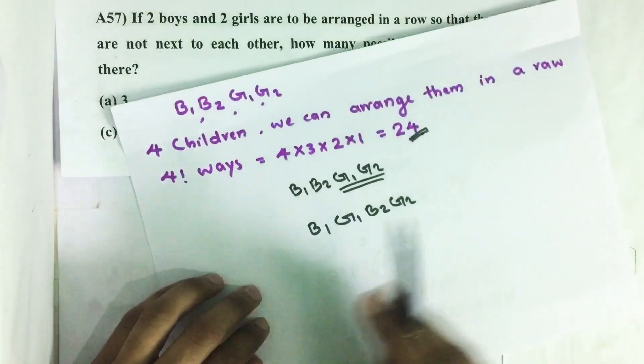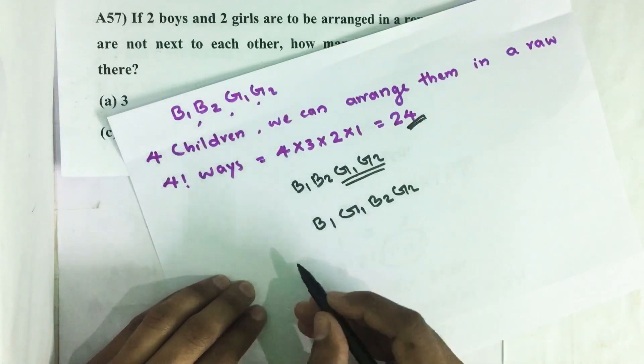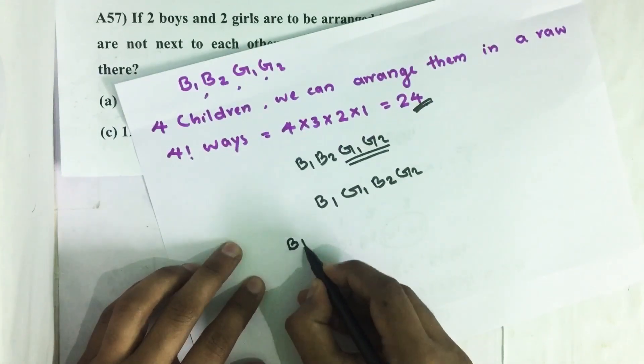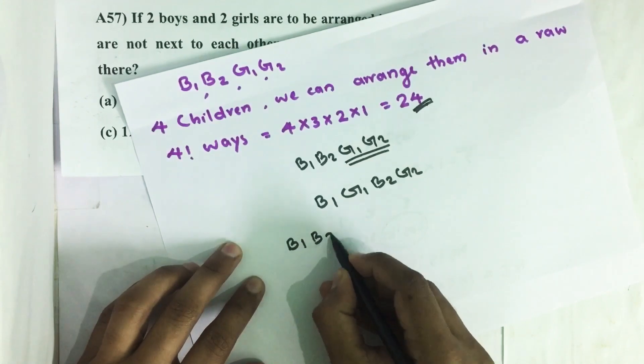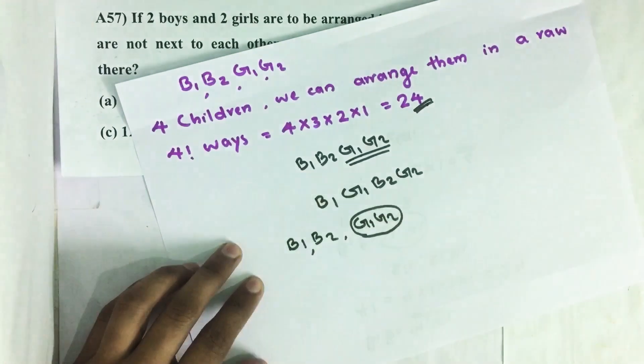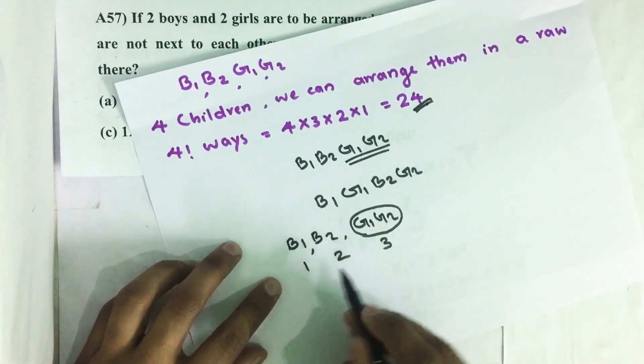Then we get the total number of arrangements possible where girls are not next to each other. So first we find how many arrangements are there where girls are next to each other. For that, B1, B2, G1, G2, we are considering this as one item.